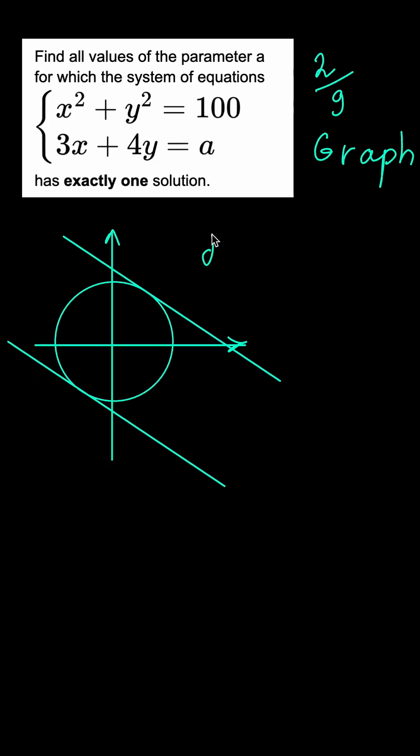Now let's use the formula for the distance from a point to a line. The formula looks like this, and to use it we're going to say that for the tangency to occur, the distance from the center of the circle to the line should be equal to the radius of the circle or 10.